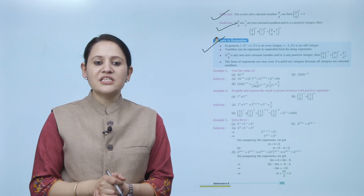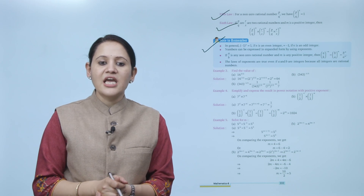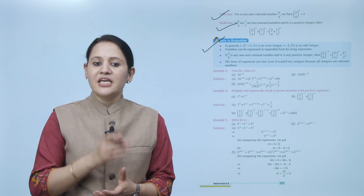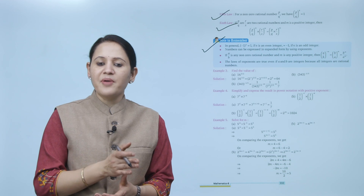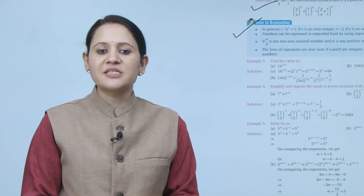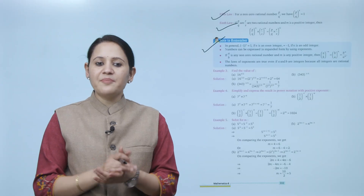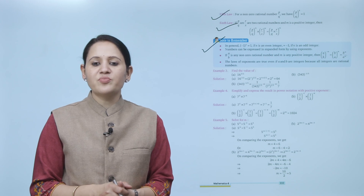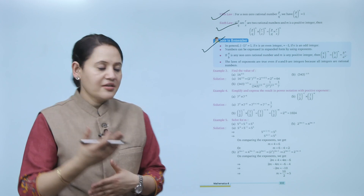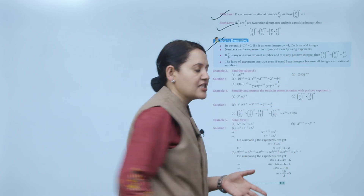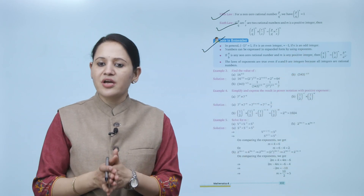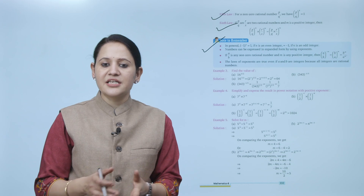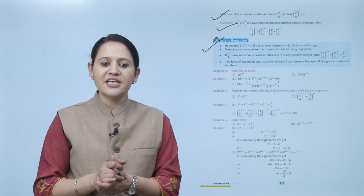Note to remember: in general, (-1)^n equals 1 if n is an even integer, and -1 if n is an odd integer — even power gives a positive value, odd power gives a negative value. Also, if a/b is any non-zero rational number and m is any positive integer, then (a/b) to the power -m equals (b/a)^m, or equivalently b^m / a^m. The laws of exponents are true even if a and b are integers, since all integers are rational numbers.